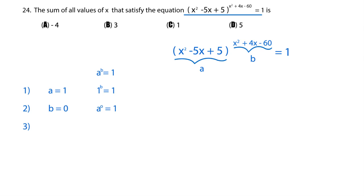And then our third possibility, and this is the one most students miss, is if a is equal to negative 1, and this is important, b is even.